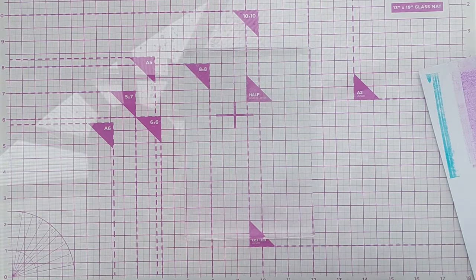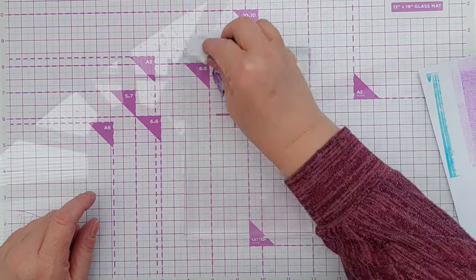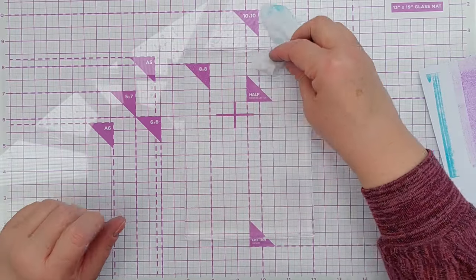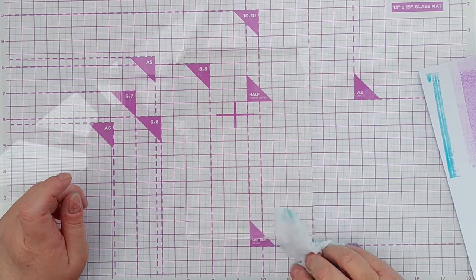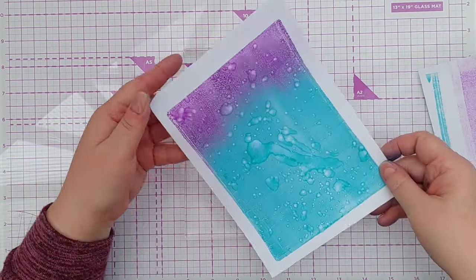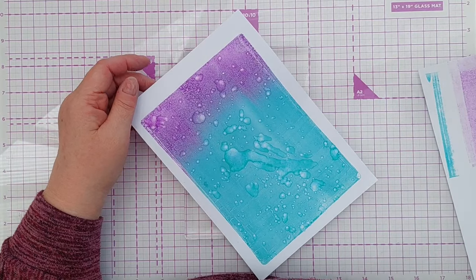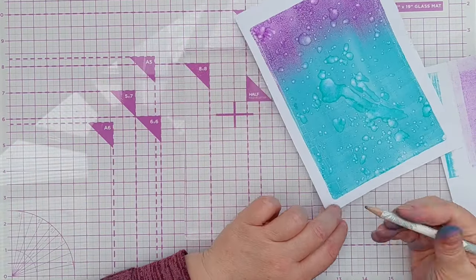Obviously you don't have to do the water dripping stage. That's just to add a little bit of extra texture. So that's the effect you get with the gel plate, and I'm going to write that on here so we don't forget.